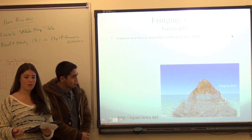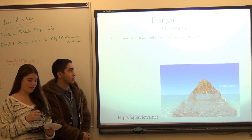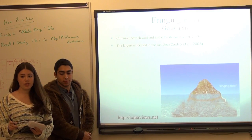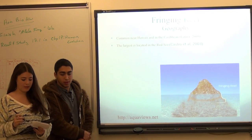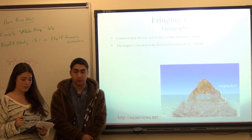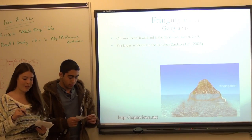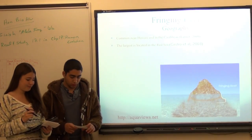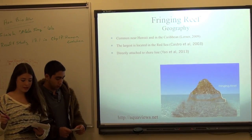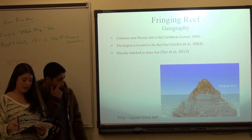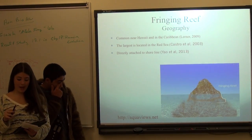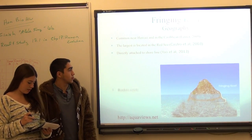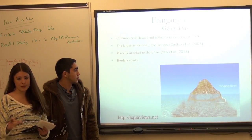Fringing reefs are common near Hawaii and in the Caribbean, always along the coastline. The longest fringing reef is located in the Red Sea and runs about 4,000 kilometers. They are directly attached to the shore and sometimes actually resemble beach in some aspects, and they border the coasts.